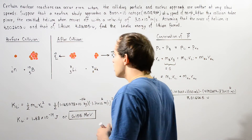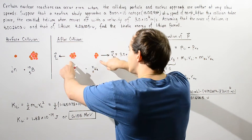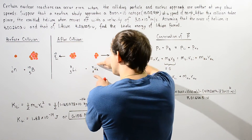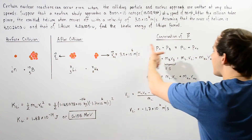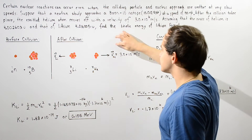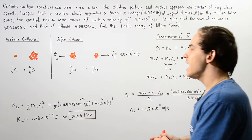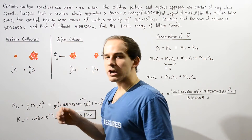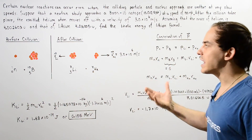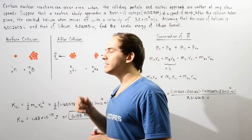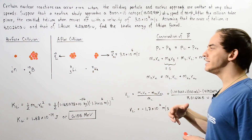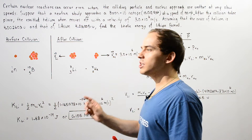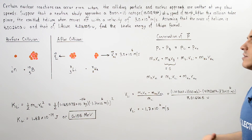Following our collision, we have two atoms that move away in opposite directions. The produced helium atom moves in the positive direction with a velocity of 3 times 10 to the 6 meters per second. The velocity of lithium is in the opposite direction, but we don't know what that velocity is. If we find the velocity of the lithium, we can then calculate its kinetic energy using the non-relativistic kinetic energy formula.